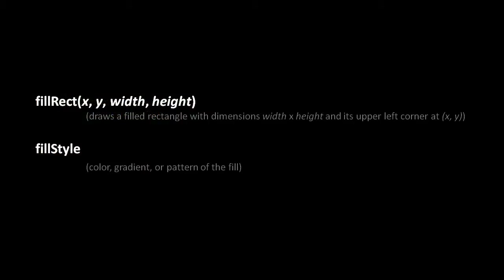Perhaps the simplest thing we can draw in the canvas is just a solid rectangle, using the fillRect method of the context object. Before we do so, we should set the fillStyle property to specify what color subsequent rectangles should be. For the fillRect method, we simply provide four numbers: the x,y coordinate specifying the top left of the rectangle, and then its width and height. The coordinates can be floating point values, they don't have to be integers. The fill style is specified as a string just like in CSS — either a common color name like black or red, or a color specified by three or six hexadecimal digits.